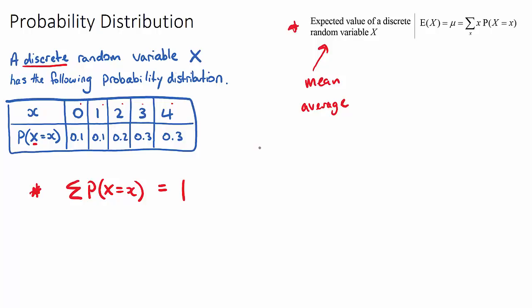So the formula to work out the expected value, which is E and then X, the expected value of our variable, is we just take the score, which will be 0, and we multiply it by its corresponding probability, so 0.1. And then we add, and we do it for all of them. It would be 1 times 0.1, plus 2 times 0.2, and then plus 3 times 0.3, and then we'll plus 4 times 0.3. And if we add all of this up...